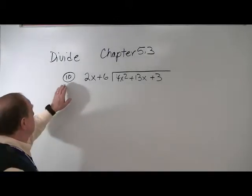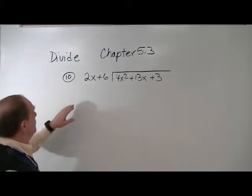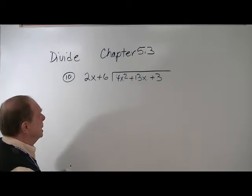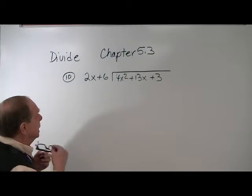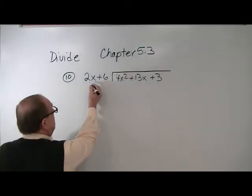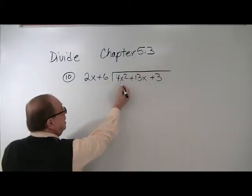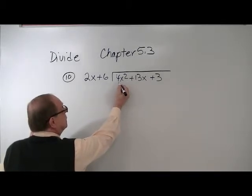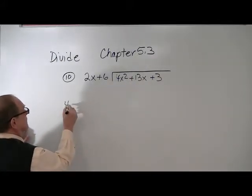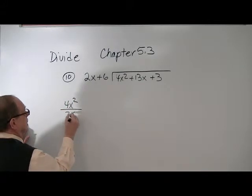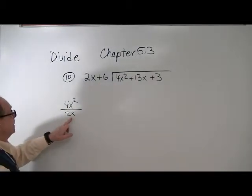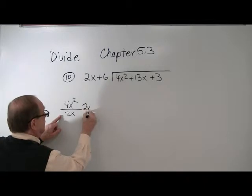We're continuing with chapter 5.3. We're now going to do a problem that's called long division. Now, long division is set up like I have it here. And what we're going to do is to take the 2X and see how many times it will go into 4X squared. And if you're wondering how to do it, just look at this. So we're taking this term and dividing it by this. And this goes into there 2X times. So this is what you put up here.